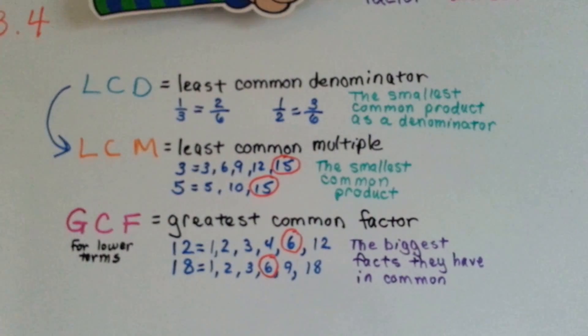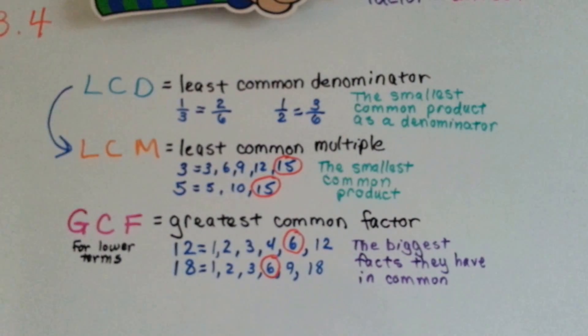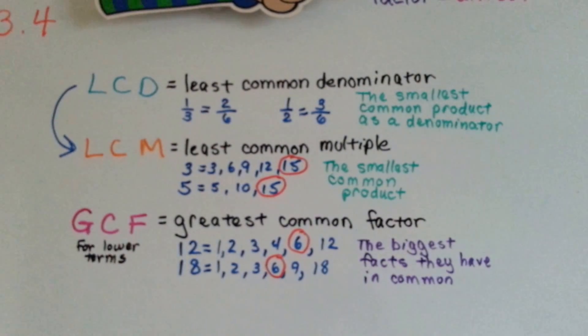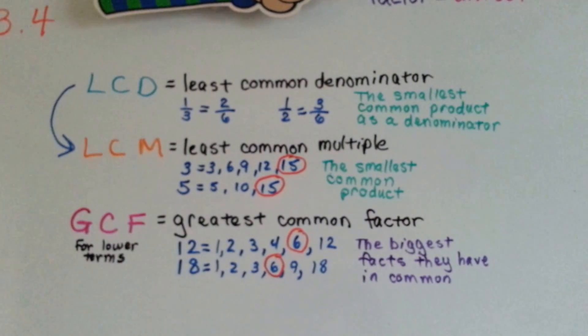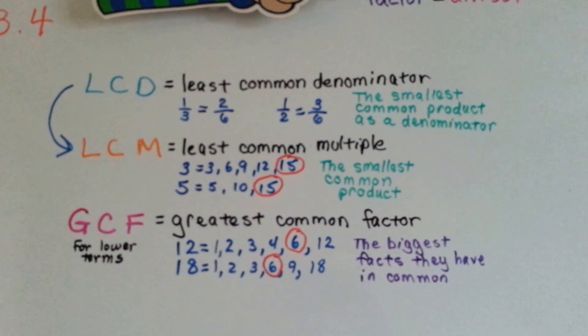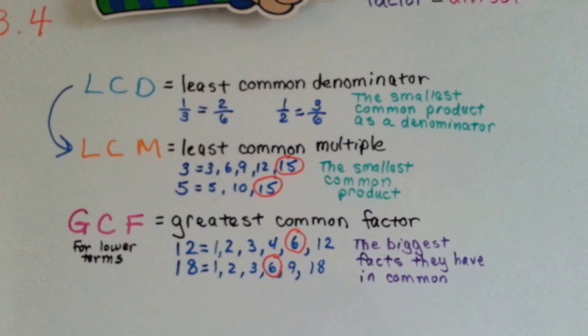An LCD, the least common denominator, is really the smallest common product that's being used as a denominator. For a third and a half, they can meet at 6. So that would be the smallest common product that they have that can be used as a denominator.